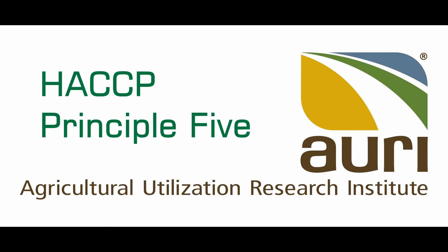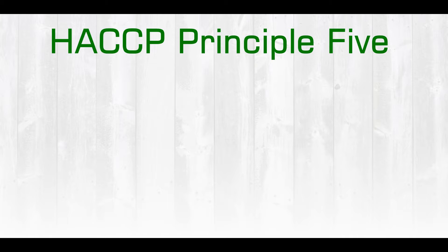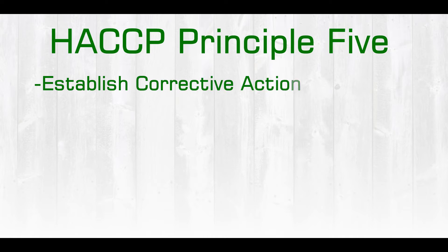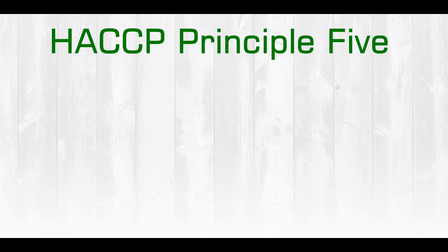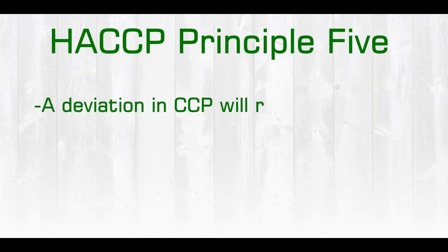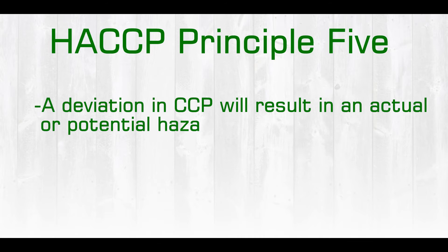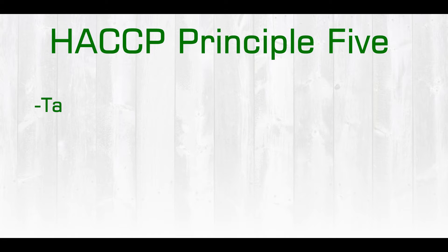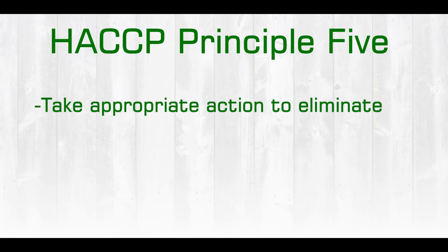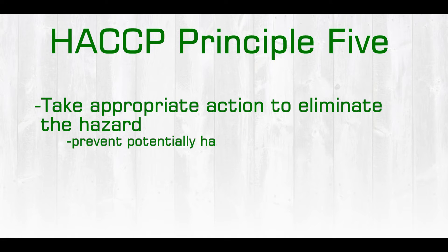Welcome to Video 6, where we will discuss HACCP Principle 5, which is to establish corrective action. If a deviation in the critical control point occurs, it will result in an actual or a potential hazard to the consumer, so we need to take appropriate action to eliminate that hazard.